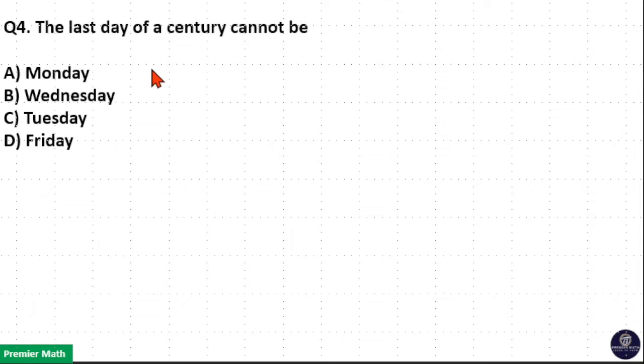The last day of a century cannot be... Here, 100 years contains 5 odd days, which means Sunday plus 5 will give you Friday. So last day of 1st century, Friday.